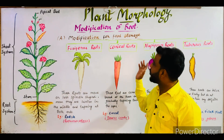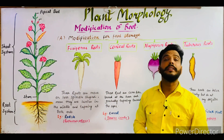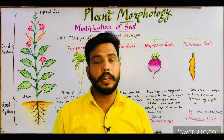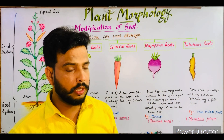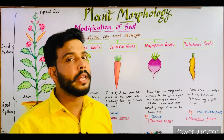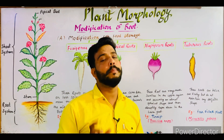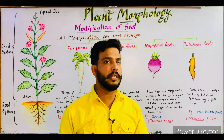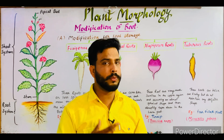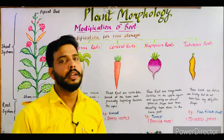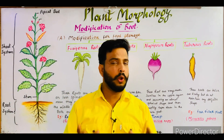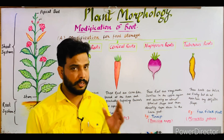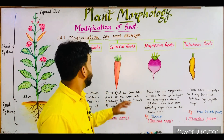The next modification is conical roots. When a root appears in a cone shape structure, it is known as conical — it is broad at the base and tapers towards the apex, forming a conical shape. The best example of a conical root is carrot, with the botanical name Daucus carota.